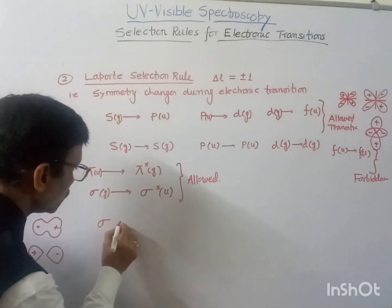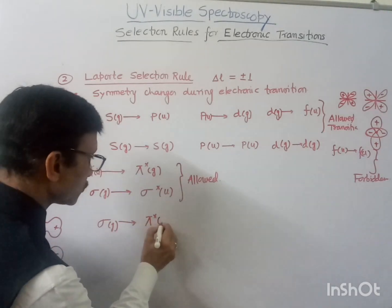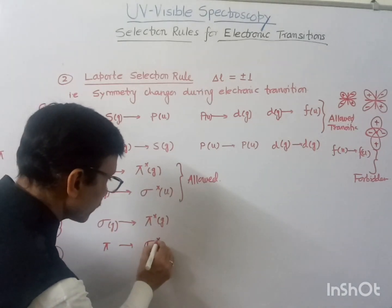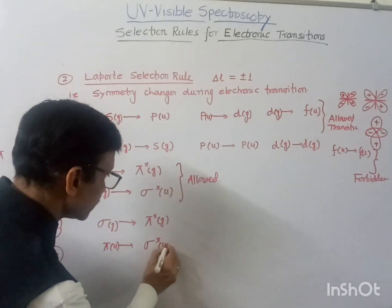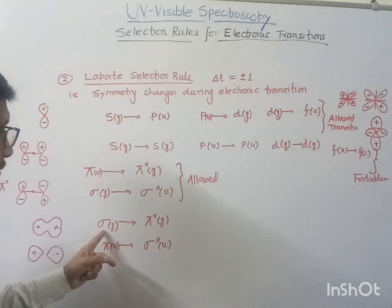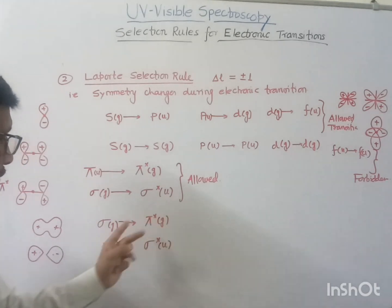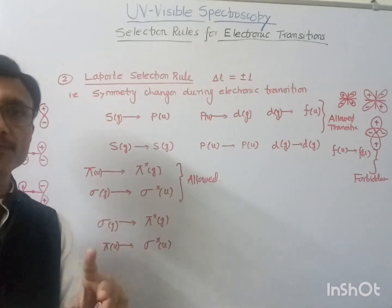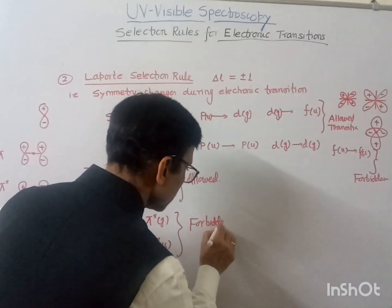However, sigma to pi-star is not allowed: sigma is gerade and pi-star is also gerade, so symmetry remains the same. Similarly, pi to sigma-star is not allowed: pi is ungerade and sigma-star is also ungerade. In both these transitions, the symmetry does not change. Only transitions from symmetric to non-symmetric orbitals, or vice versa, are allowed. These are forbidden transitions.